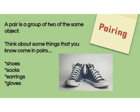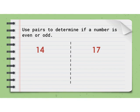Let's talk about pairing. What is a pair? Think about some things that you know that come in pairs: shoes, socks, earrings, gloves. A pair is a group of two of the same object. We can use pairing to find even and odd numbers.